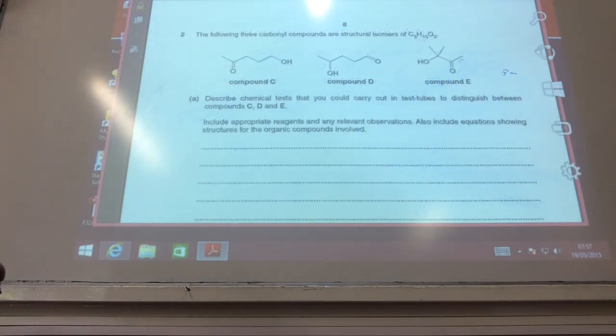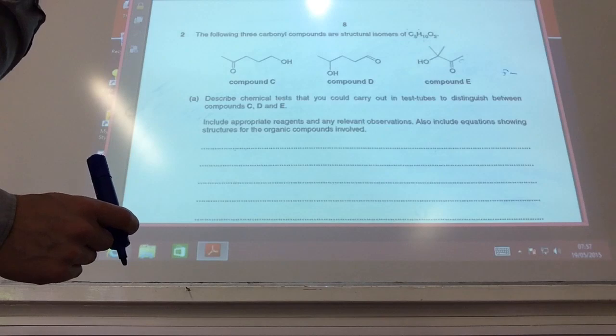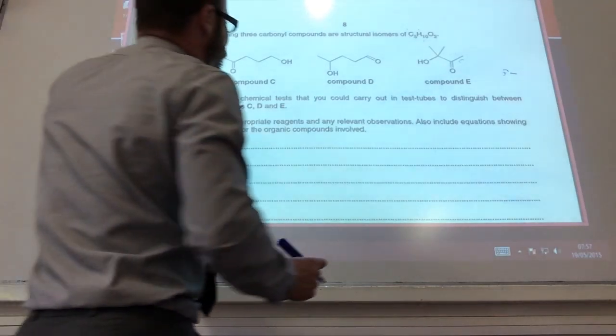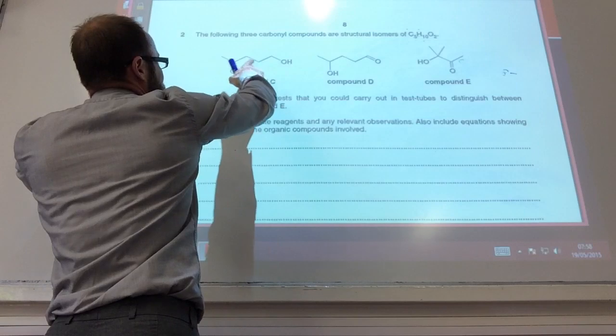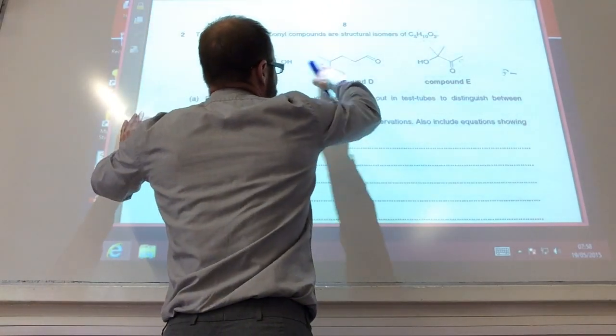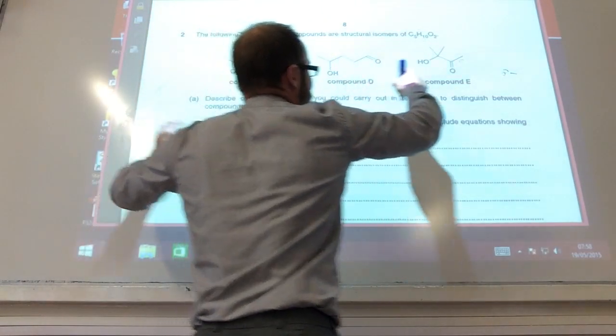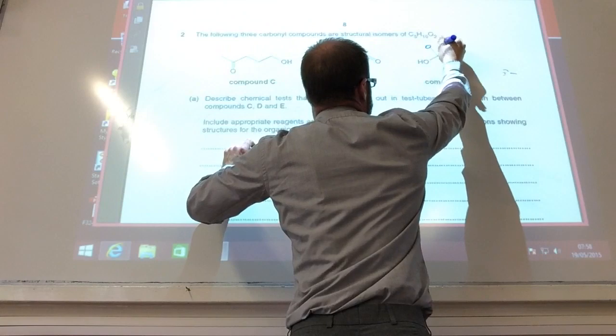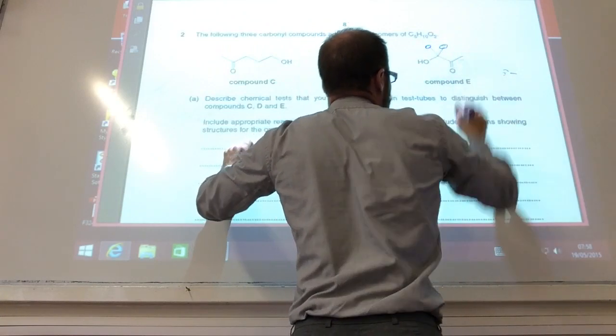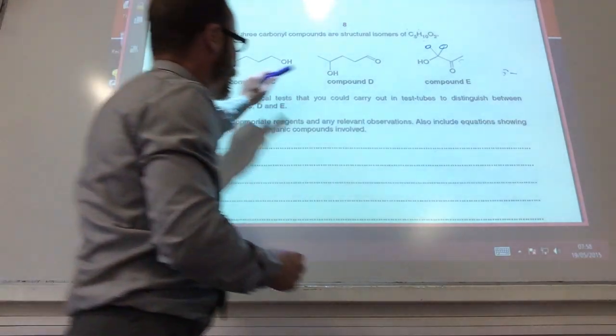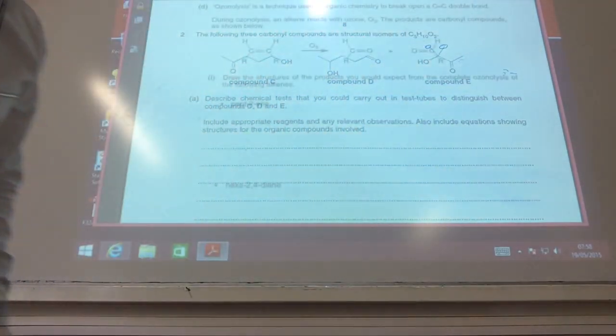For the next one, they want me to predict the number of carbon-NMR peaks for each of these. Okay, let's have a look. These are all different, aren't they? So 1, 2, 3, 4, 5 for that one. These are all different, 1, 2, 3, 4, 5. For this one, these two are actually the same. So 1, 2, 3, 4 for compound E. So 5, 5, 5, 4.